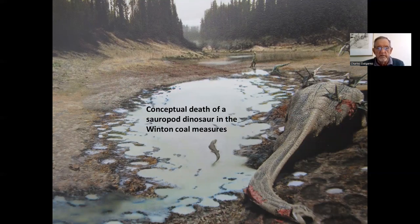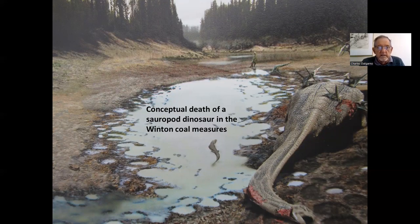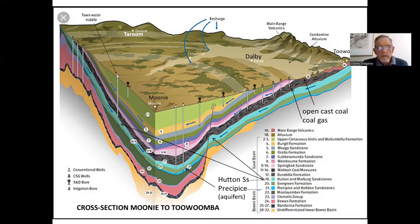We see a conceptual scene of a sauropod dinosaur dying in the Winton coal measures — collapsed, with predators active as it lies in the swamps. The footprints of that character are those preserved around Roma. This cross-section in the region around Millmerran and Toowoomba shows open-cast coal measure situations within the Eromanga Basin, and coal seam gas in slightly deeper areas where open-cast coal is not practical, causing a great deal of contention around Dalby. You can see how these relate to the deeper Hutton sandstone aquifers.